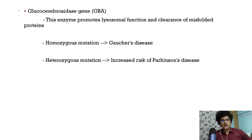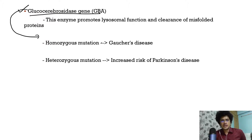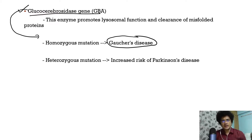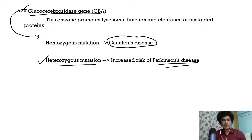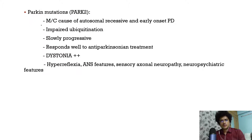Next is glucocerebrosidase gene mutation — the mutation seen in Gaucher's disease. A homozygous mutation presents as Gaucher's disease, but a heterozygous mutation puts the patient at increased risk of developing Parkinson's disease. Glucocerebrosidase is a lysosomal enzyme that helps in the clearance of misfolded proteins.